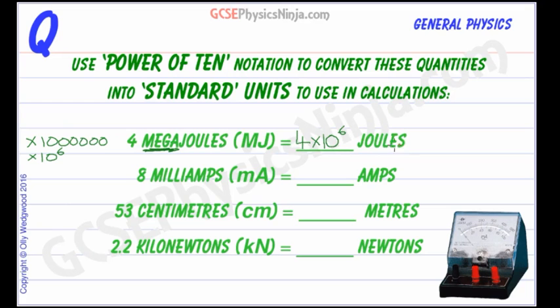Much easier to write it as 4MJ. There we go. But we'd use this number in our calculations. Because that's the standard type of notation.